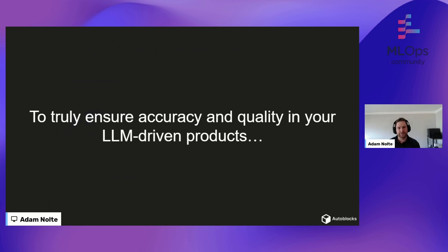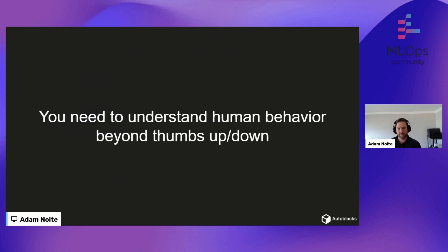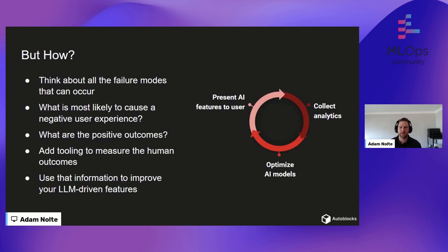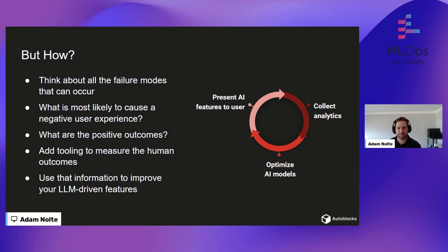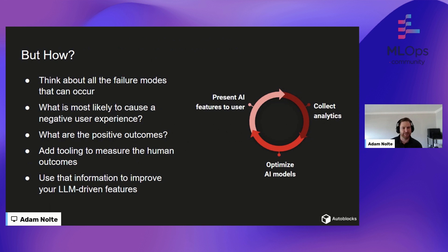Which brings me to: to truly ensure accuracy and quality in your LLM-driven products, you need to understand human behavior beyond the thumbs up and thumbs down. How do you do this? You need to sit and think deeply about the failure modes that can occur in your product. What's most likely to cause a negative user experience? What are the positive outcomes? Once you have that information, you can add tooling to measure those human outcomes. Then use that to optimize your AI models — and you end up in this feedback loop of presenting AI features, collecting analytics, and continuing to optimize. You want to make this feedback loop as tight as possible.